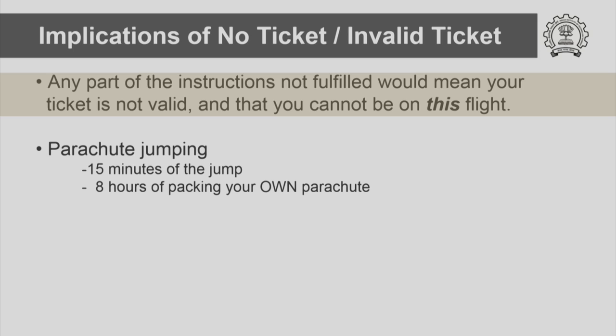Any part of the instructions not fulfilled would mean that the ticket is not valid and they cannot be on this flight. This is usually the time when students begin to negotiate — just as at any airline counter at the airport, if something has gone off or you are late by five minutes, invariably there would be some conversation between a passenger and airline staff. So we say it upfront: any of these instructions not followed will make an invalid ticket.